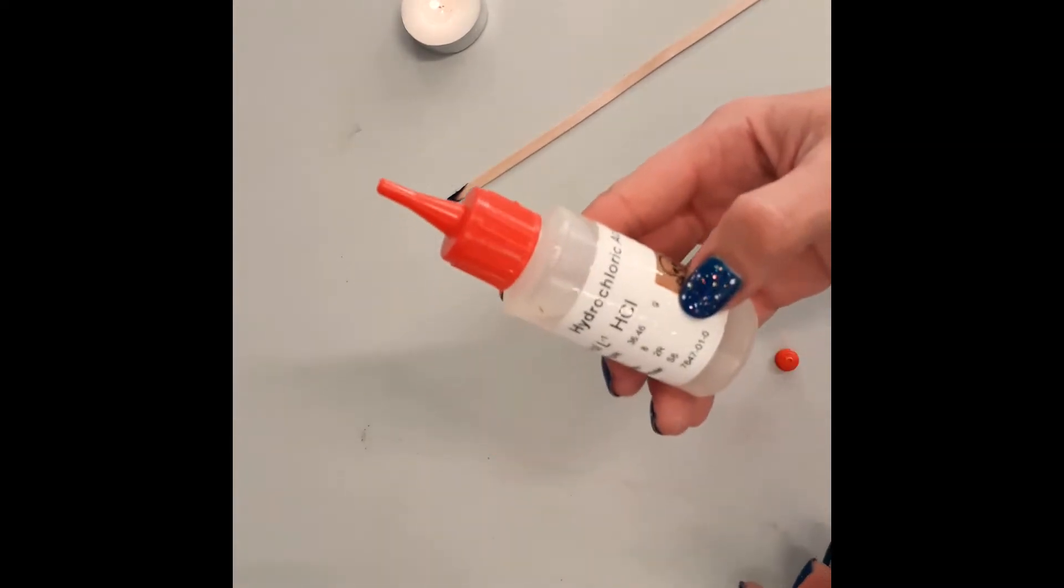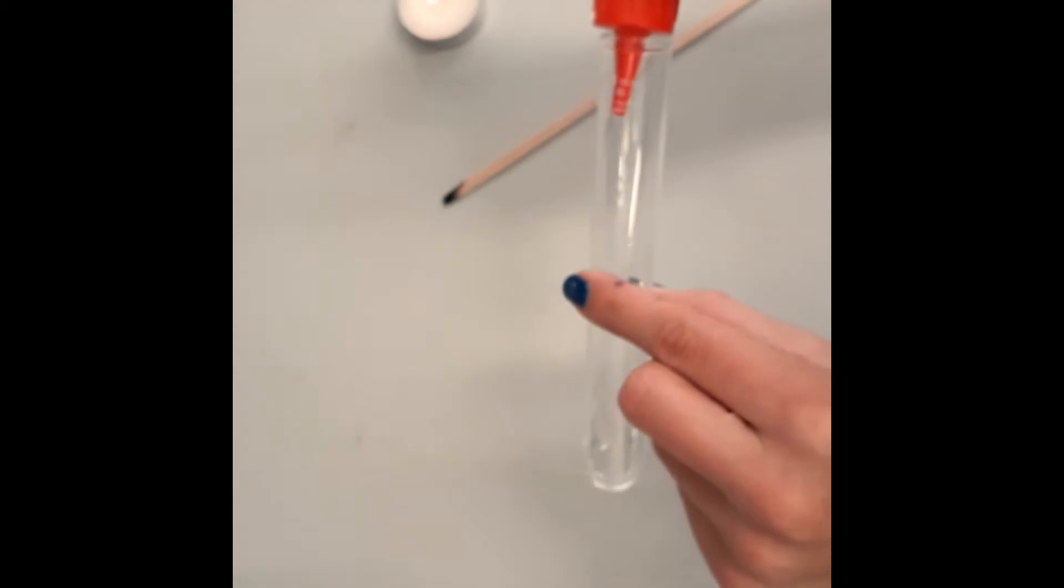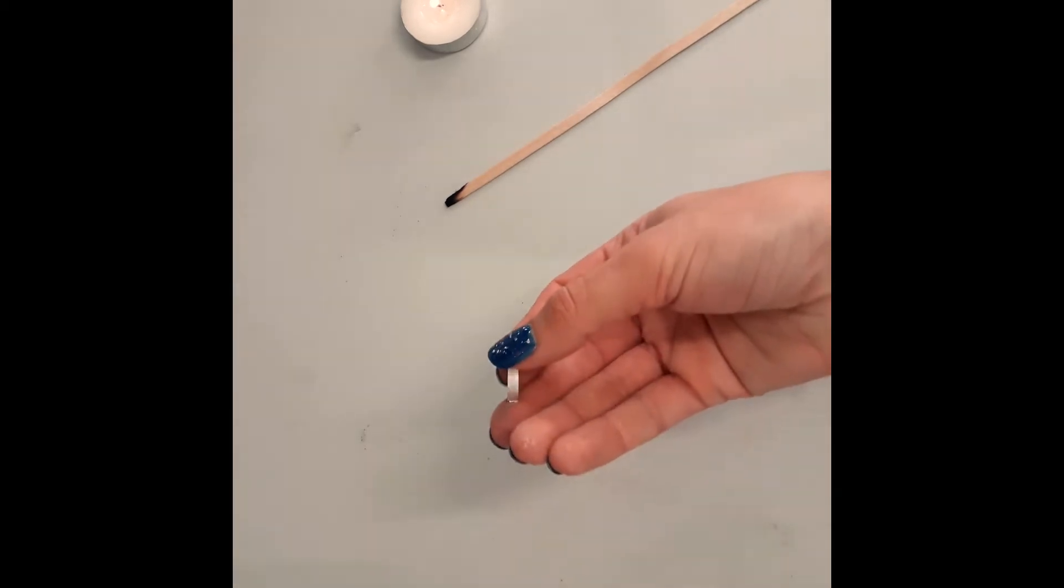Okay, so we're in the lab. I'm going to do this experiment. So I've got a test tube here and some hydrochloric acid. Pour that in about a centimeter worth at the bottom. And then we're just going to add a little strip of magnesium.